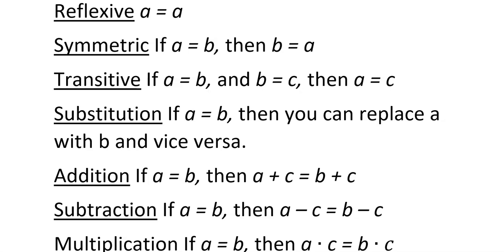Symmetric: if A equals B, then B equals A. Symmetric means we flip the left side to the right and the right side to the left — it doesn't matter what it is, you flip it over. Transitive: if A equals B and B equals C, then A equals C. The terms in the middle are the same, so the outer ones have to be the same as well.